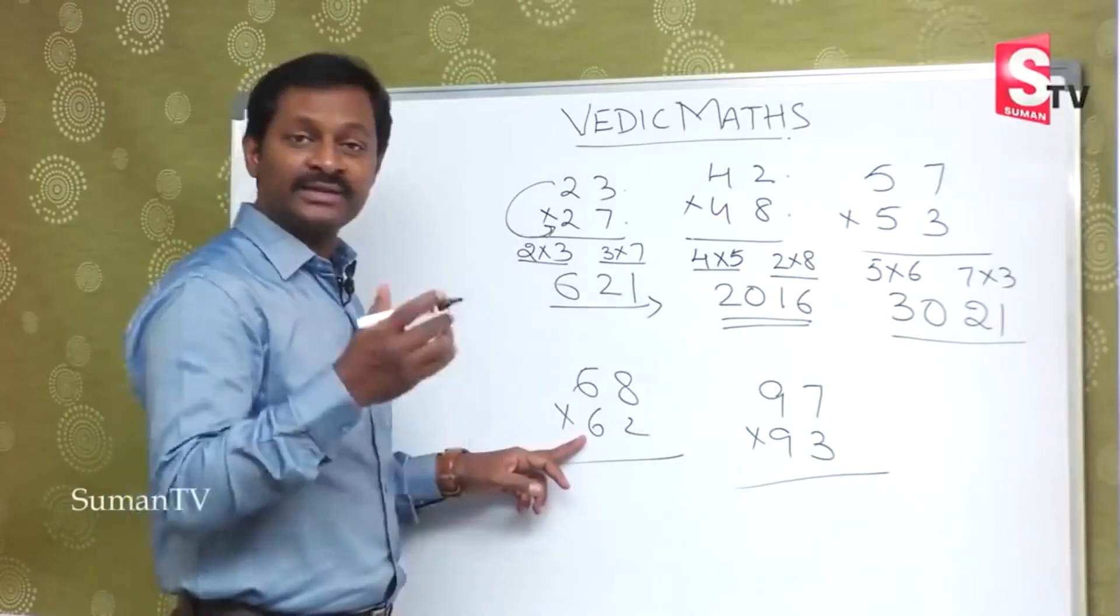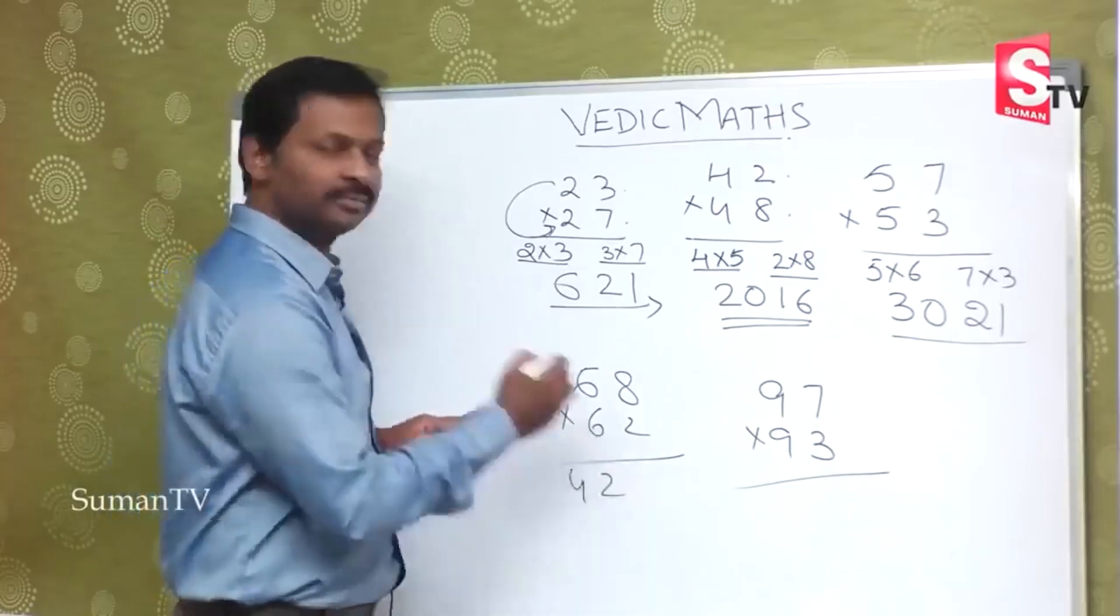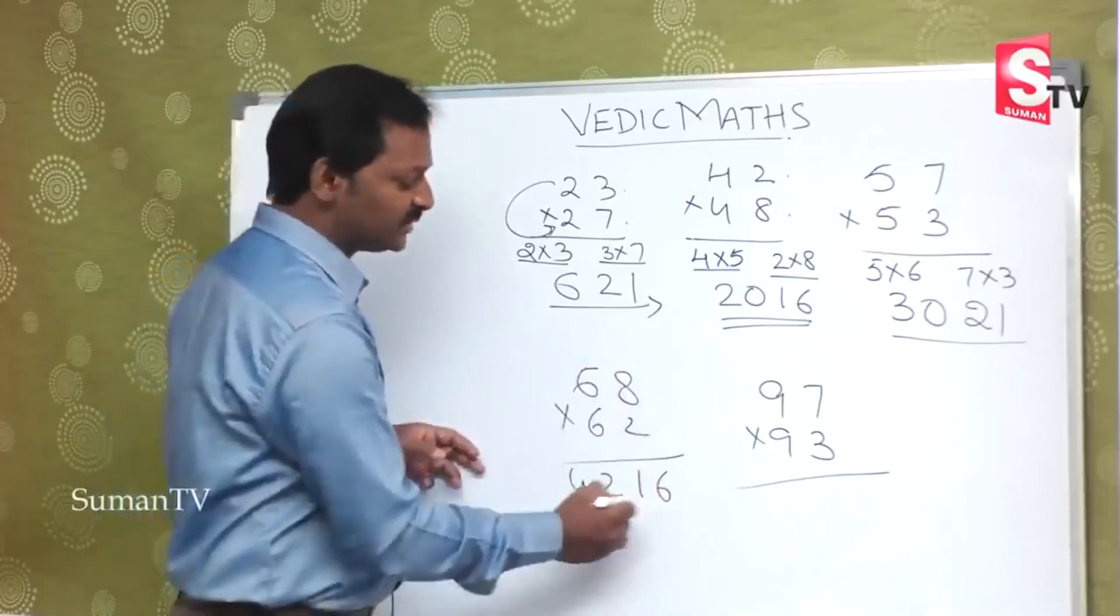6 and 6 is given, 6 into 7 is 42, and next 8 and 2, 8 times 2 is 16. This is the answer 4216.